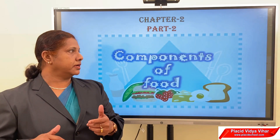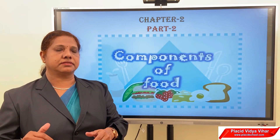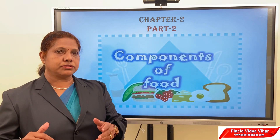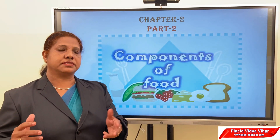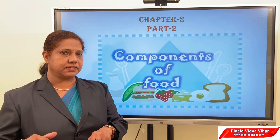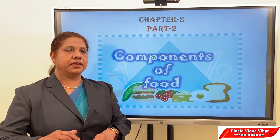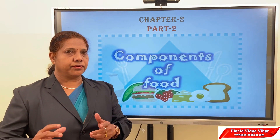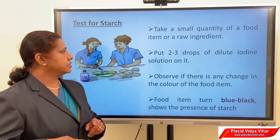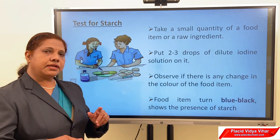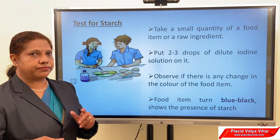In this part, we will learn the test for different nutrients, and also what is a balanced diet and what are deficiency diseases. First, we can study the test for different nutrients — the test for starch. We can test the presence of starch in a food item.